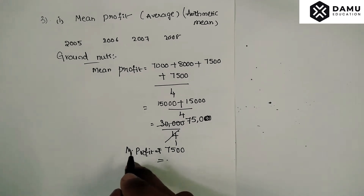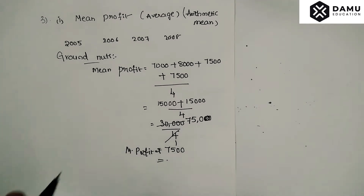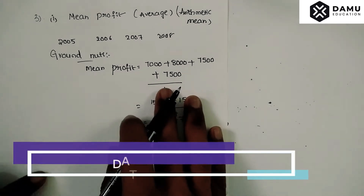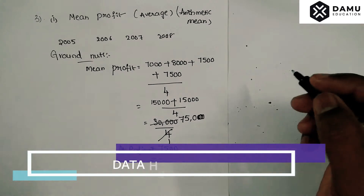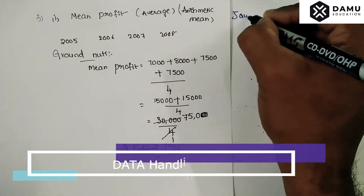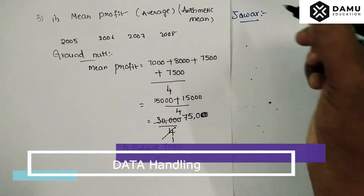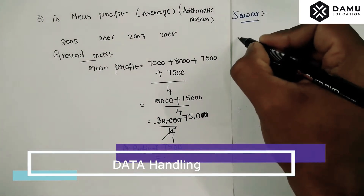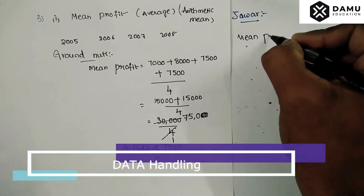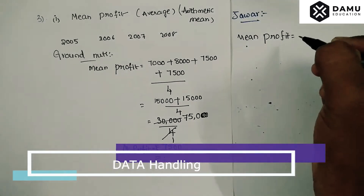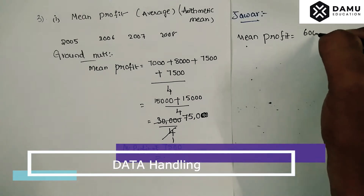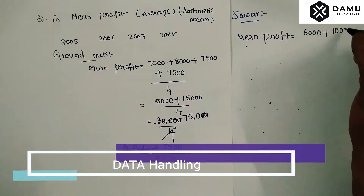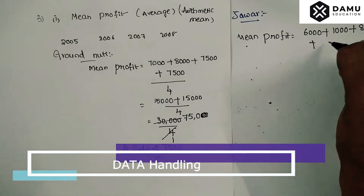Next, for Java. The mean profit for Java will be equal to six thousand plus one thousand plus eight thousand plus one thousand, divided by four.